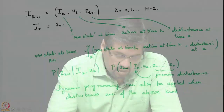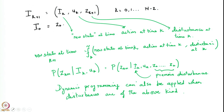Let us dwell a little bit on the way we have reduced a stochastic control problem with imperfect information to one with perfect information. We observed that the information has a recursive formula: the information at time k+1 is given as a function of information at time k, the action at time k, and the disturbance at time k+1.